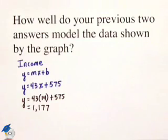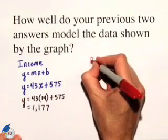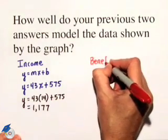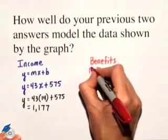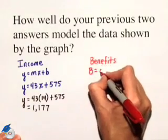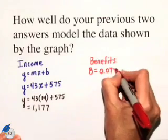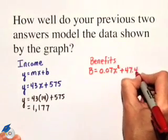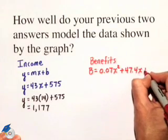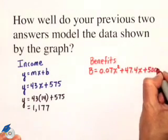Next, we modeled the benefits, and with the benefits, we were given the model B is equal to 0.07x squared plus 47.4x plus 500.